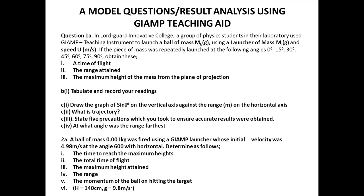Part (c) asks you to draw the graph of sin θ on the vertical axis against range on the horizontal axis. What is the trajectory? State five precautions you took to ensure accurate results. At what angle was the range farthest? A typical cap question gives a ball of mass 0.001 kg fired using a Jump Launcher at initial velocity 4.98 m/s at an angle of 60° with the horizontal. When a student has used this equipment in school, such a question in an exam is no longer abstract.